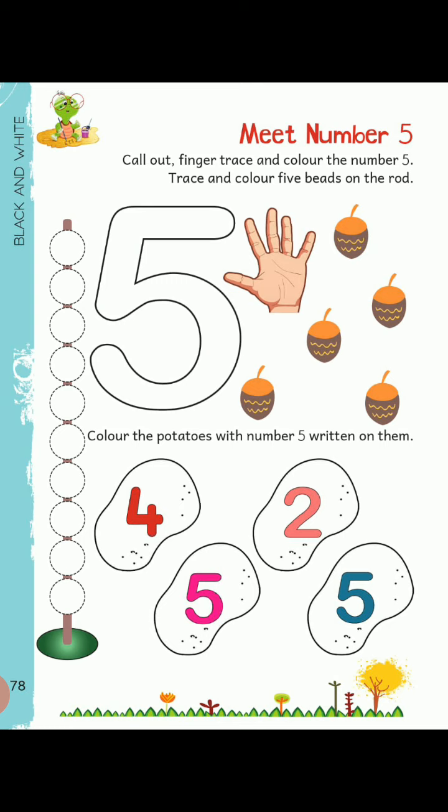Now, in the next part, we have to colour the row of beads on the very left side of this page. There are many beads in this row, but we have to colour only 5 beads. Now in the bottom part of this page, we have some potatoes with numbers written on them — we have to colour only those potatoes on which number 5 is written.